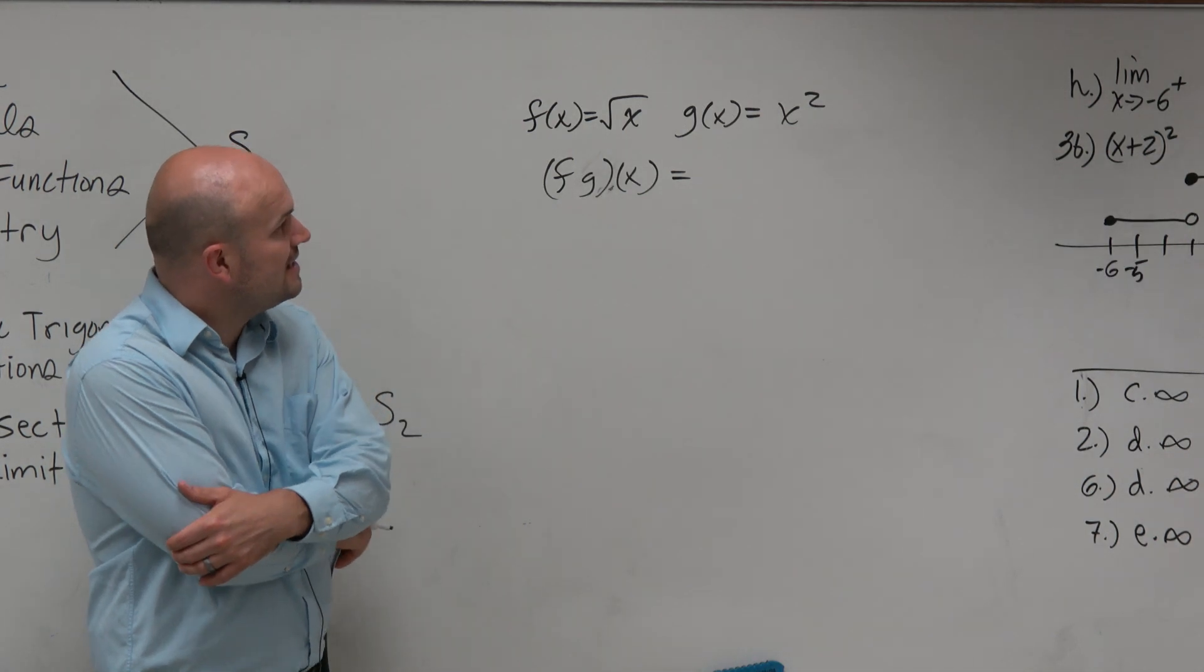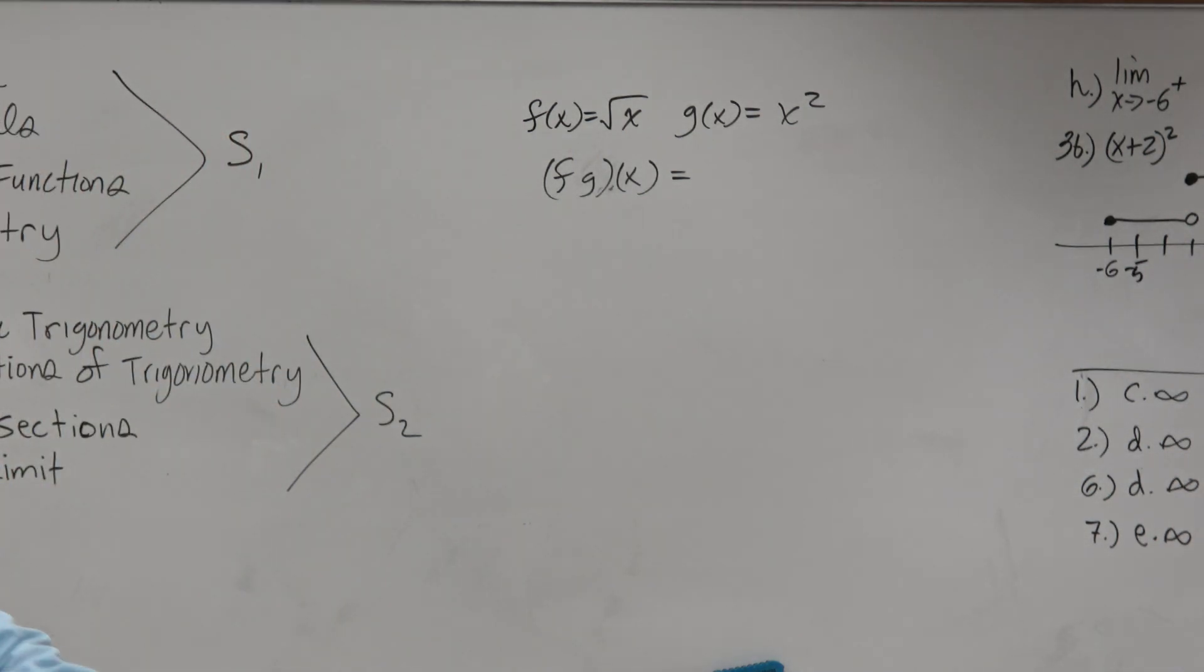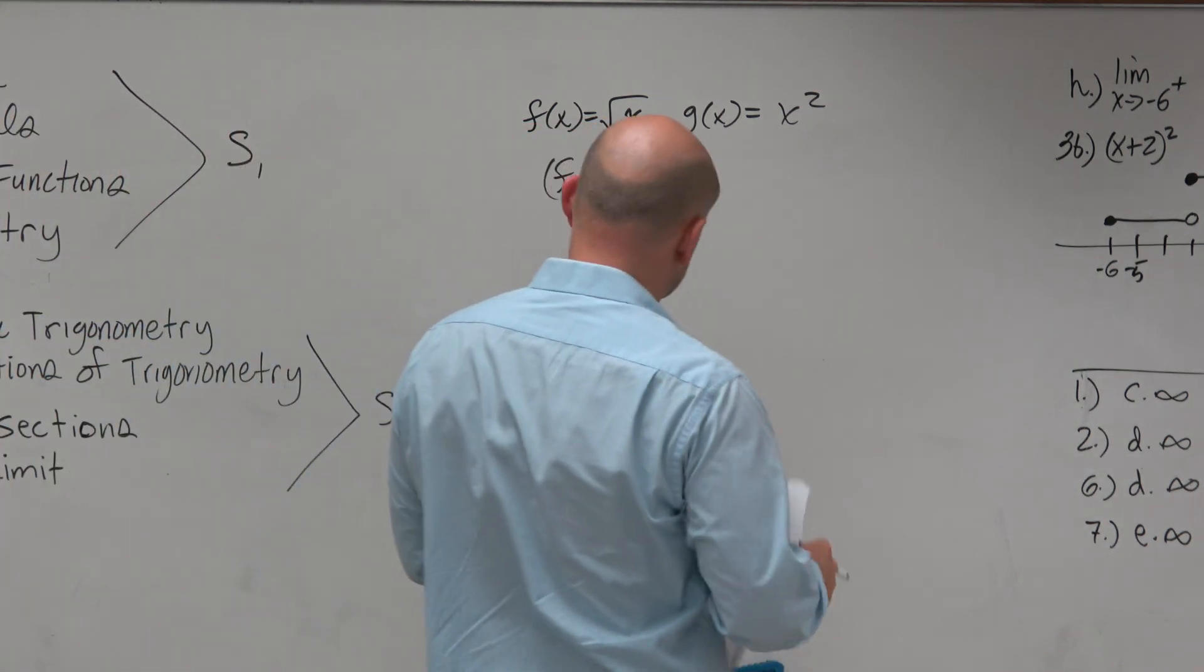so we have two functions. f of x equals square root of x, as well as g of x equals x squared. And we want to find f times g of x. So again, this is an operation of functions.